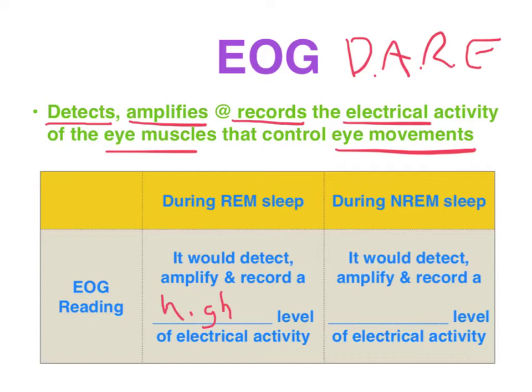Conversely, it would detect, amplify and record a low level of electrical activity when the sleeper is experiencing slow rolling eye movements, which is characteristic of non-REM sleep.